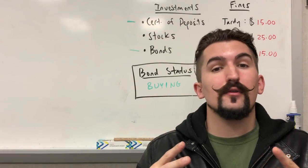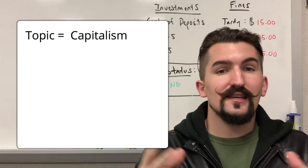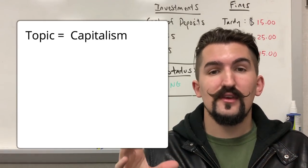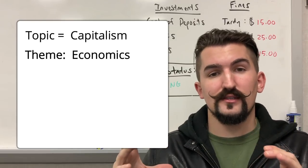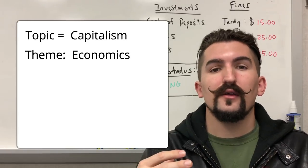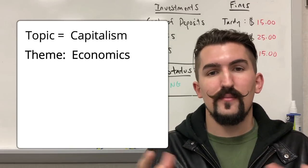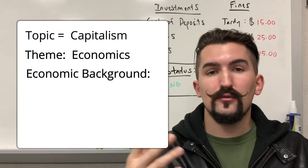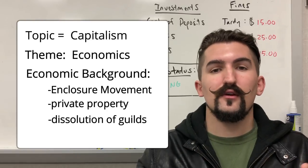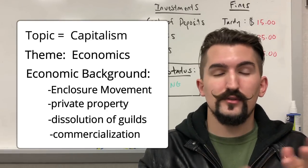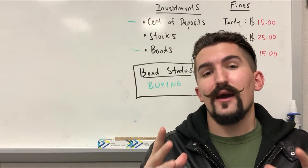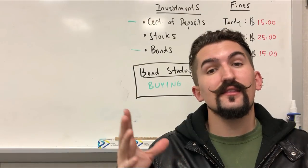For example, if it's a long essay question about the emergence of capitalism in the 18th and 19th centuries, you identify that the theme is economics. So in your introduction paragraph, you provide information about how the economic activities and theories of the time led up to capitalism — things like the Enclosure Movement, the prominence of private property, the dissolution of guilds in Western Europe, and commercialization. All of these are relevant contextual examples that provide background as to how capitalism emerged in the 18th and 19th centuries.